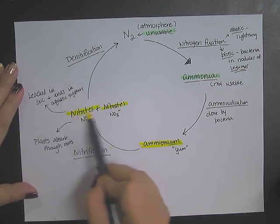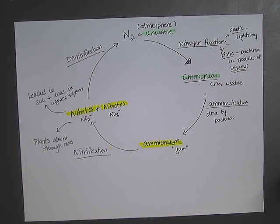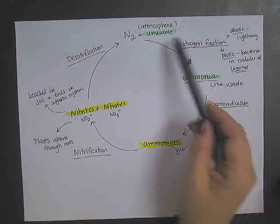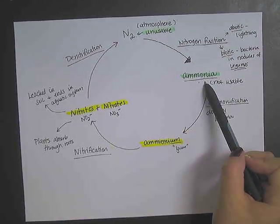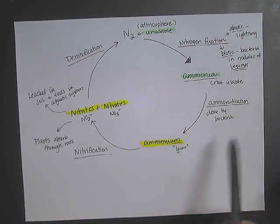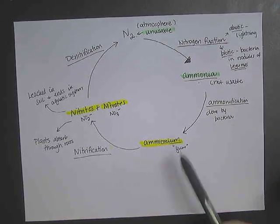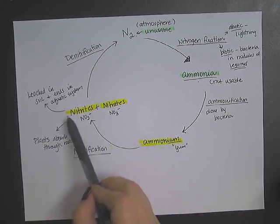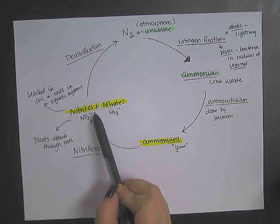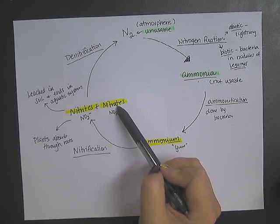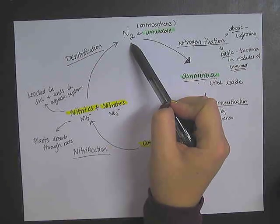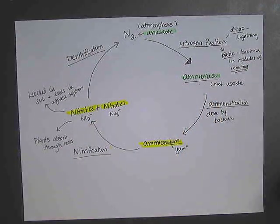And then ammonium can get converted through a process called nitrification to nitrites and nitrates. These are usable. The processes involved give you a hint as to the name. We have nitrogen fixation which will convert nitrogen to ammonia, ammonification is the conversion of ammonia to ammonium, ammonium into nitrates or nitrites is called nitrification, and your nitrites and nitrates converting back into atmospheric gas is called denitrification.